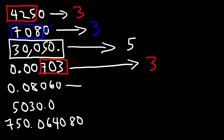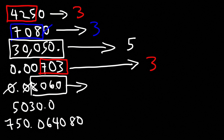For .08060, we do have a trailing zero which will be counted, and the leading zeros will not be counted. So there are four significant figures.